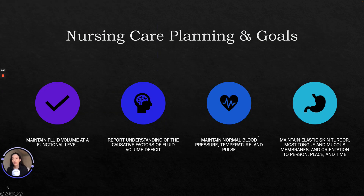Our nursing care plan goals include maintaining volume at a functional level, reporting understanding of causative factors of fluid volume deficit, maintaining normal blood pressure, temperature and pulse, and maintaining elastic skin turgor, moist tongue and mucous membranes, and orientation to person, place, and time.